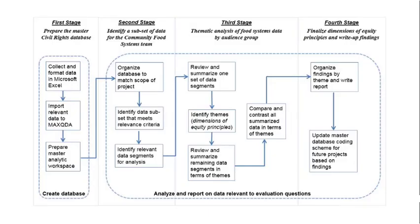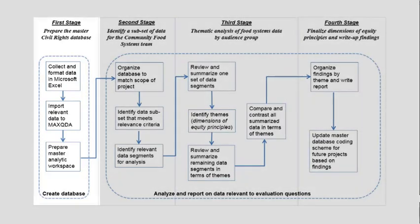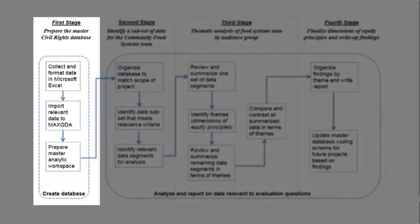The first stage prepares the Barster Civil Rights Database, and this involves formatting data in Microsoft Excel, importing it into MaxQDA, and reorganising data in readiness for the analysis.